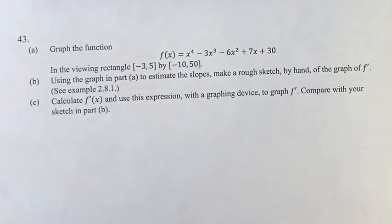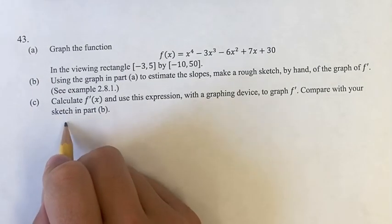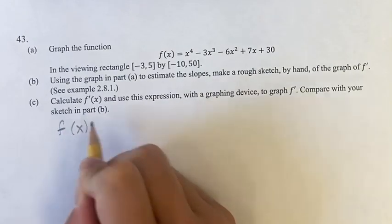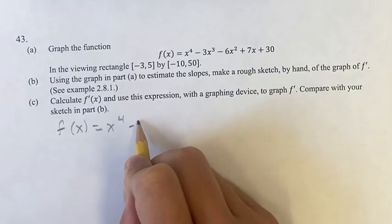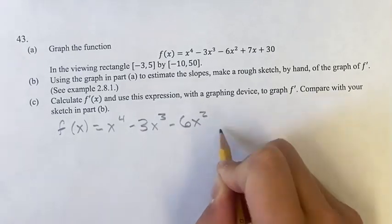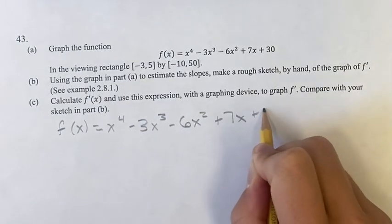First let's find what f prime of x is, find what the derivative is. So just rewriting, f(x) equals x to the fourth minus 3x cubed minus 6x squared plus 7x plus 30.